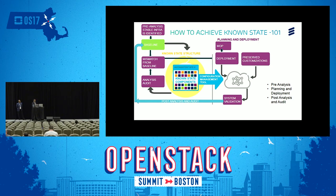We then have the mismatch data between the baseline and the data from the inconsistent site. Our aim is to implement this mismatch data into inconsistent site X. To summarize: in the pre-analysis phase, we create a baseline and have the mismatch data ready to deploy into the inconsistent site.